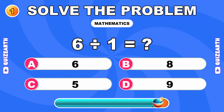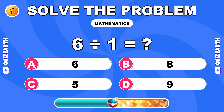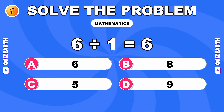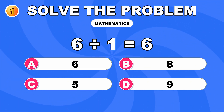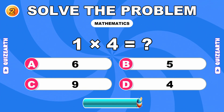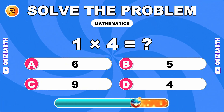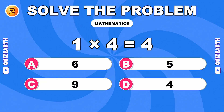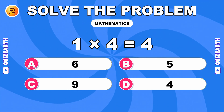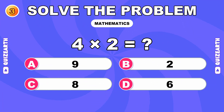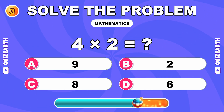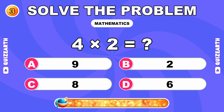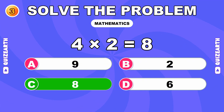What is 6 divided by 1? Perfect. The answer is 6. What do you get when you multiply 1 by 4? Brilliant start. The answer is 4. How much is 4 times 2? You're on point. The answer is 8.